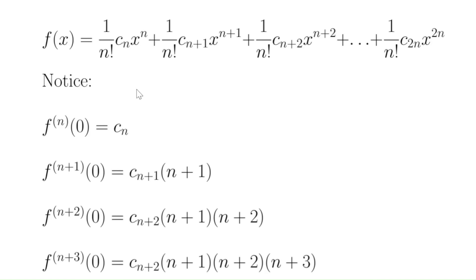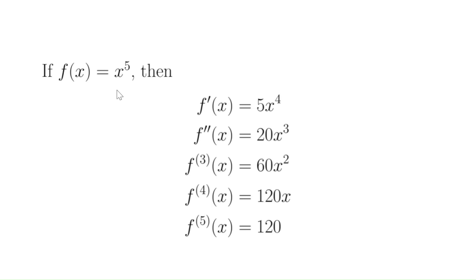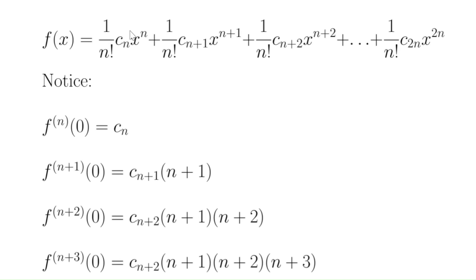When we take the n-th order derivative, the higher order terms still have x's and give zero when we plug in 0. For the term c_n times x^n over n factorial, the n-th derivative of x^n is n factorial — for example, the 5th derivative of x^5 gives 5 factorial = 120. So the n factorial cancels with the 1 over n factorial, and we just end up with c_n, which is an integer. So the n-th order derivative at 0 is an integer.